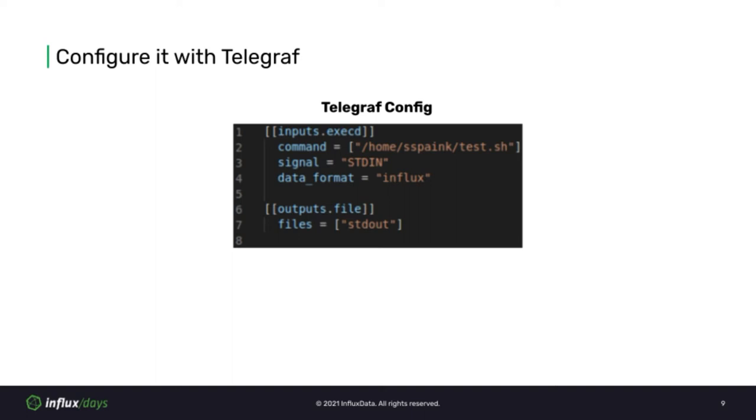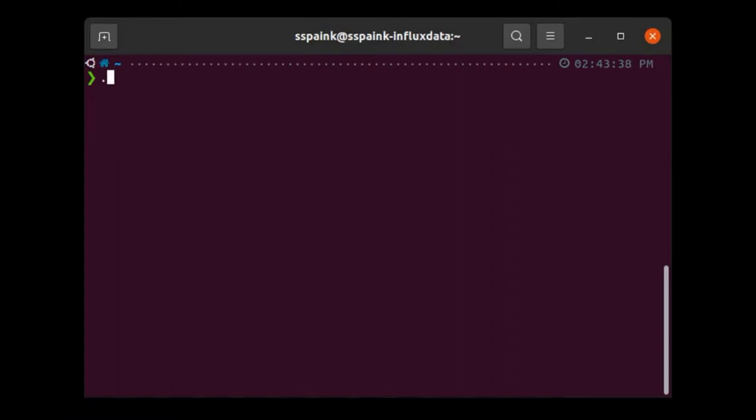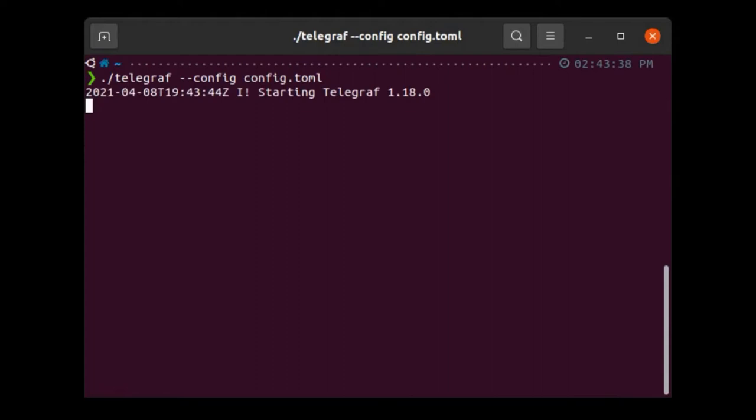The last piece of this config sets the output to standard out so we can see this plugin in action. As I execute Telegraph, you can see that it will start our script, which will start incrementing the counter, and it will start outputting the metrics to standard out.